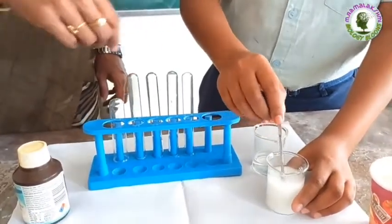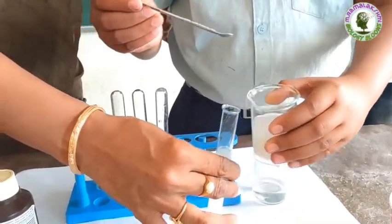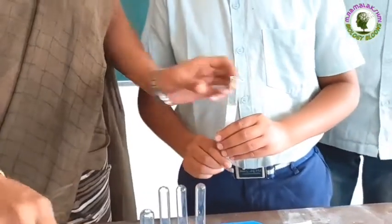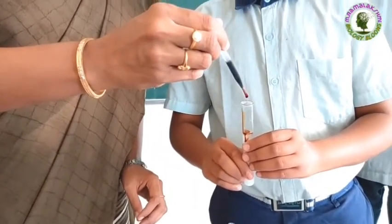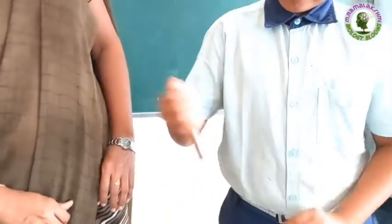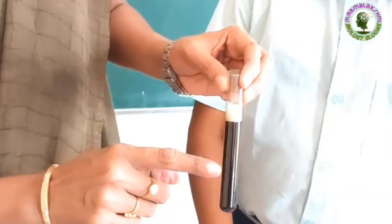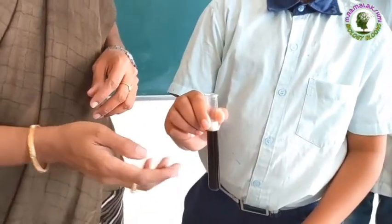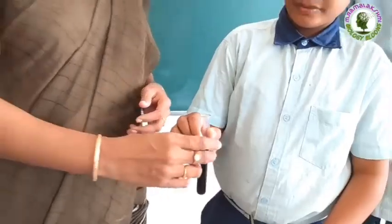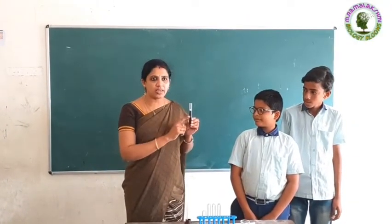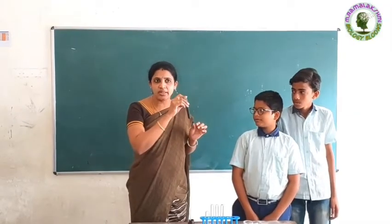Okay Shyam, is it ready? Now take some starch solution into a test tube, then add some iodine drops to it and shake it. Children, what is its color now? Blue-black color. Can anyone say why this solution turns blue-black? It is indicating the starch. Yes, very good. Children, if any substrate turns blue-black when iodine is added, that indicates the presence of starch. So this rice flour solution contains starch.